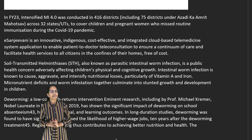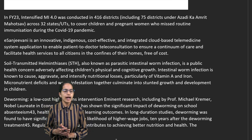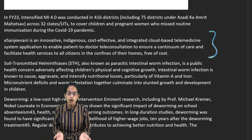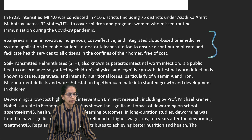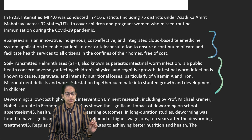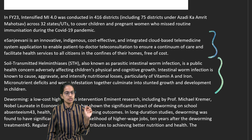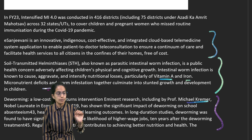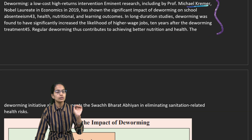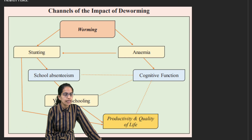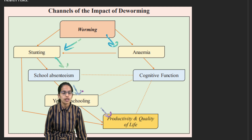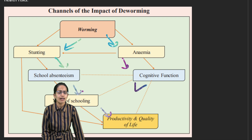The Intensified Mission Indradhanush 4.0 scheme covers children and pregnant women under nutrition and immunization programs. eSanjeevni is a free telemedicine portal providing health services to citizens at home. Soil-transmitted helminthiasis — parasitic intestinal worm infection — causes deficiency of vitamin A, iron, and micronutrients. Professor Michael Kremer, who won the Nobel Prize in Economics in 2019, showed that deworming reduces stunting and anemia, thereby improving school attendance, years of schooling, cognitive functions, and overall quality of life.